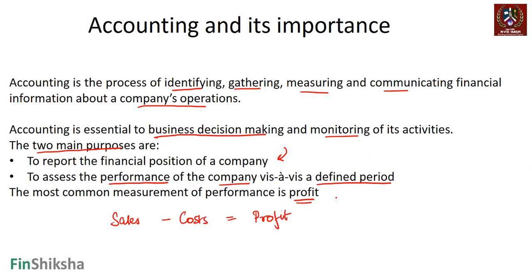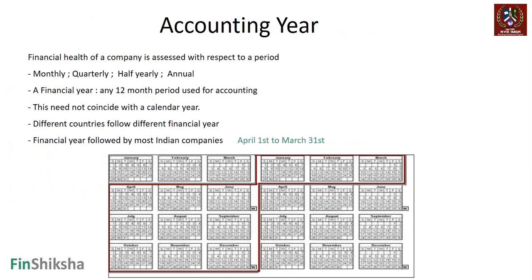The accounting statement tells us whether a business is making money or not. It tells us the financial position of a company at any given point in time, and if the financial position changes from today to tomorrow, we can compare that change across different periods. That's the main purpose of accounting statements.